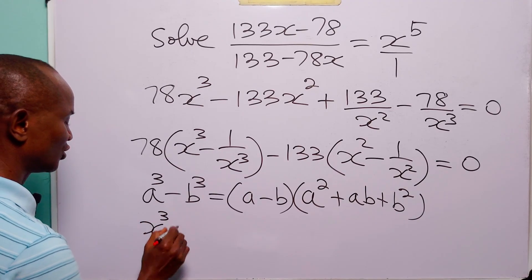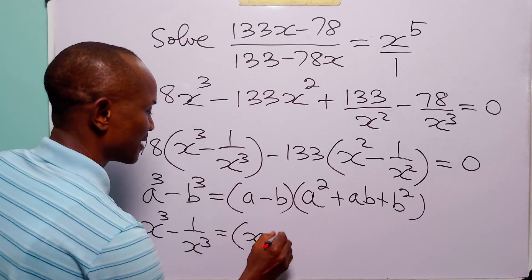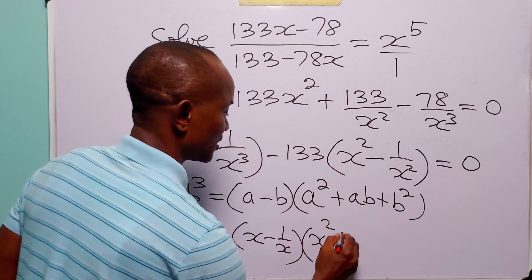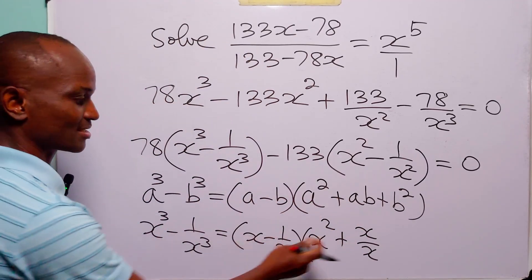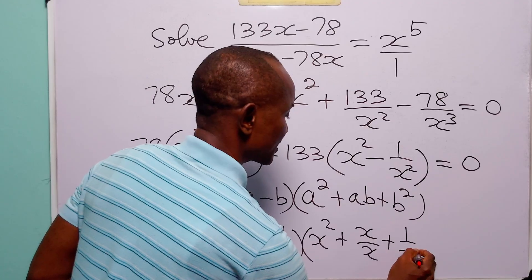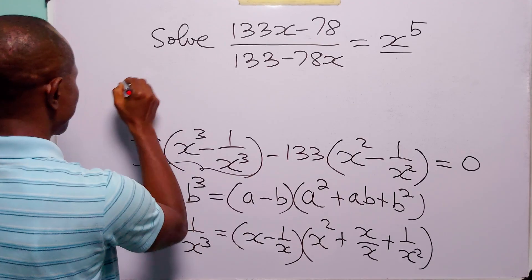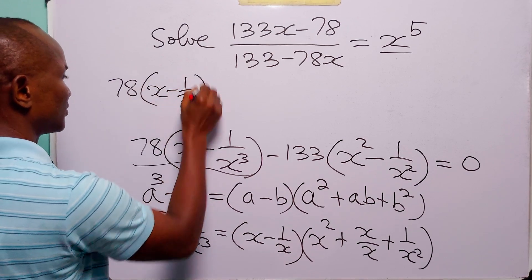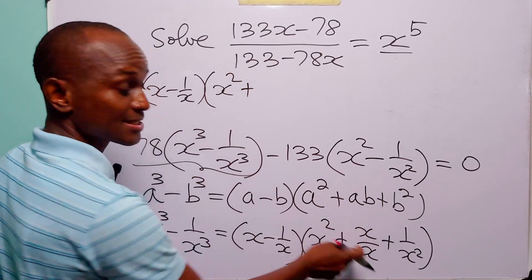So x cubed minus 1 over x cubed is equal to x minus 1 over x, multiplied by x squared plus x times 1 over x plus 1 over x squared. Since a is x and b is 1 over x, x over x equals 1, so this middle term simplifies to 1.